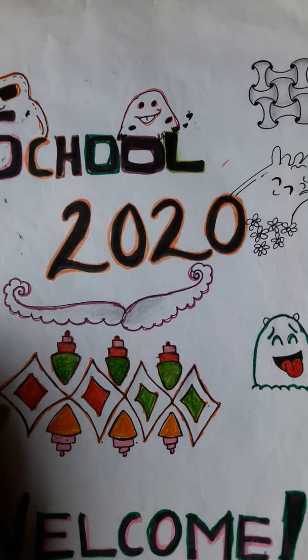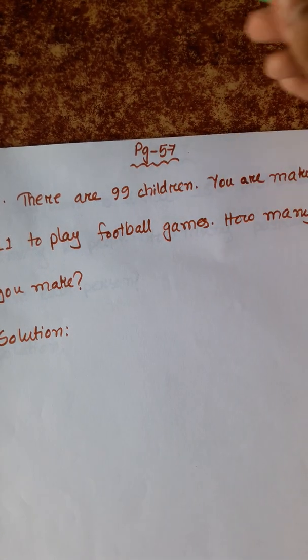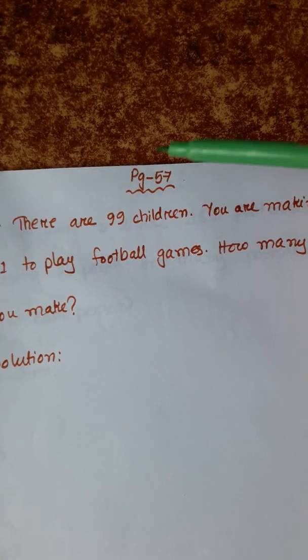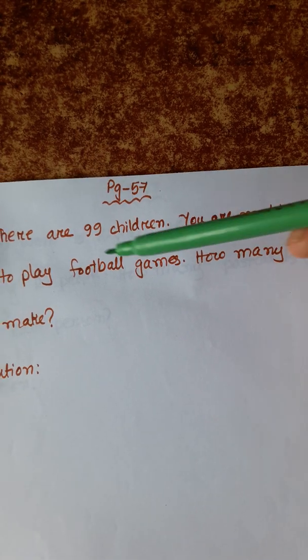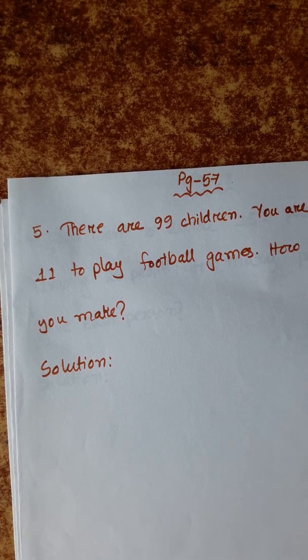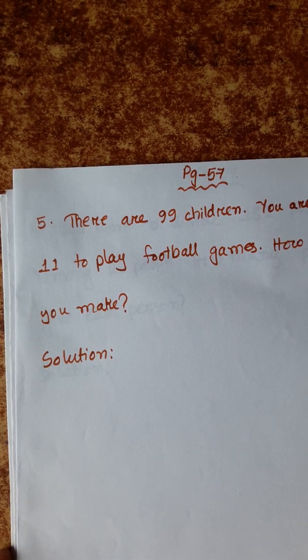Welcome to School 2020. Today we will do the rest of the word problems of chapter 4, page 57. It starts with number five: there are 99 children, you are making a team of 11 to play football games. How many teams can you make? We have 99 children and I have to make a team of 11 to play football — so how many teams can I make out of 99 children?